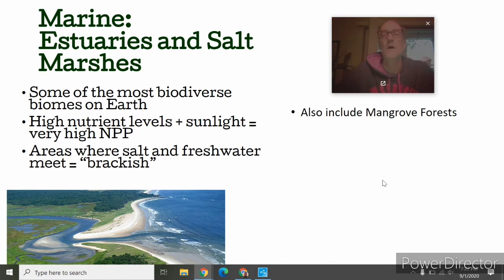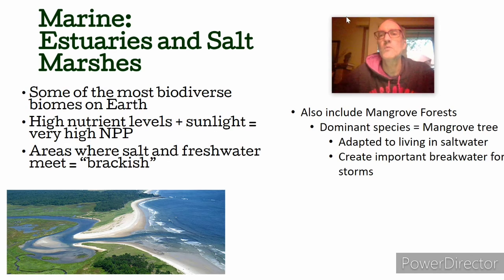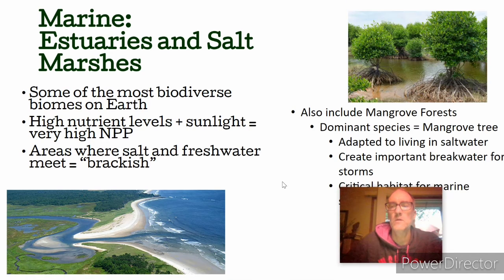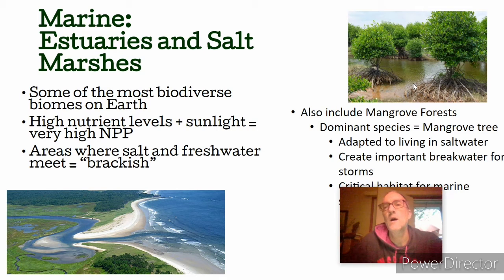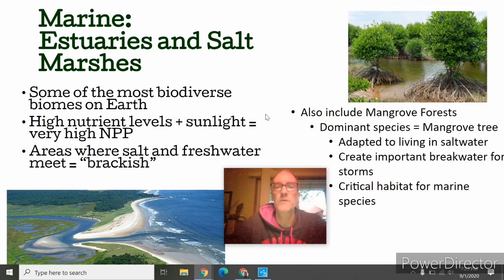Estuaries also include a very important ecosystem called mangrove forests, usually located in places like the Caribbean and South America. They are dominated by mangrove trees, which are adapted to living in salt water. They create very important storm breakers for coastal areas. Here's a picture of a mangrove forest — they have these extensive roots that can be exposed to the air to do gas exchange. They're really important habitat for small fish to hide, and as mentioned, very important in protecting coastal areas.